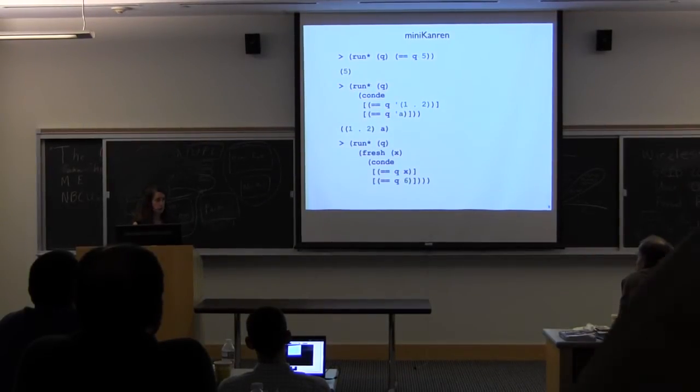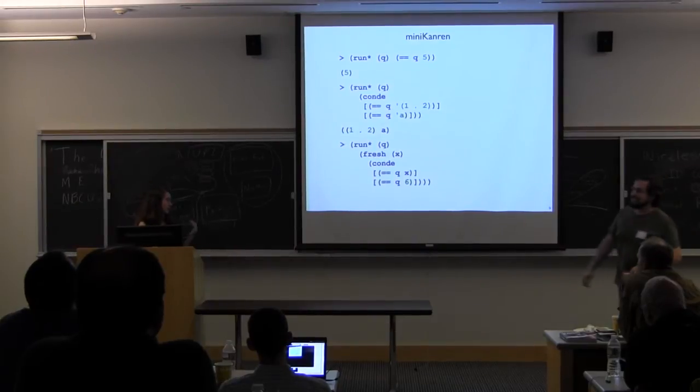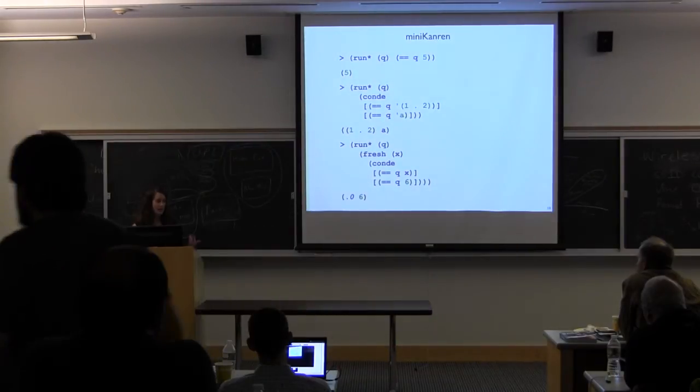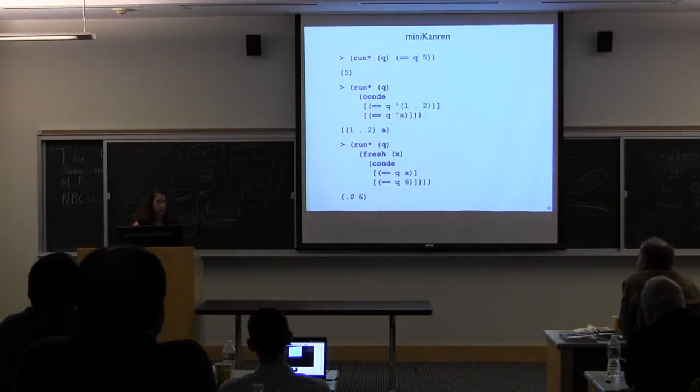And finally, you can introduce new variables, and you can say that q is this fresh variable x, or it is 6, and you get, well, q can be anything, or q can be 6. OK, so that is your Minicannon primer.